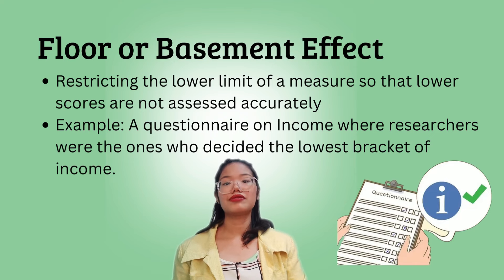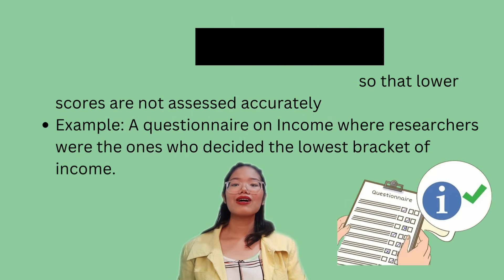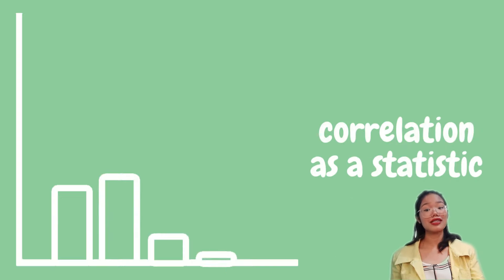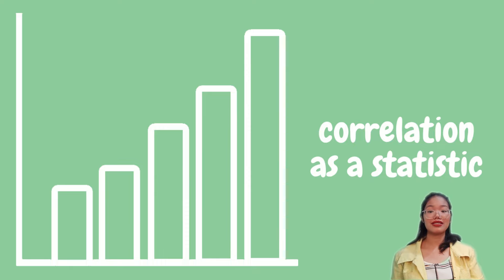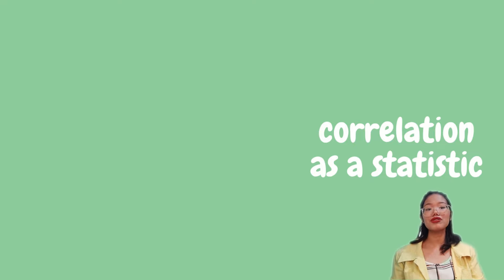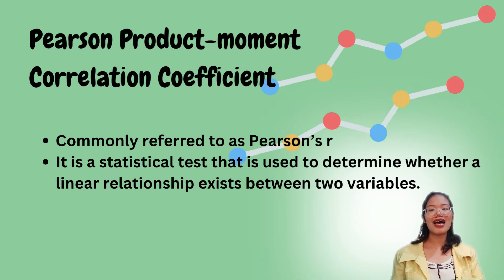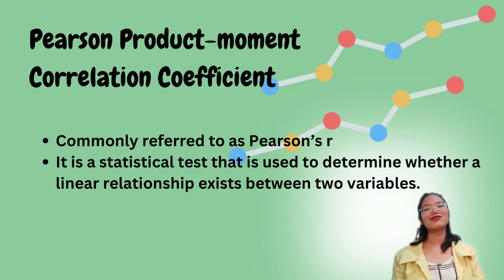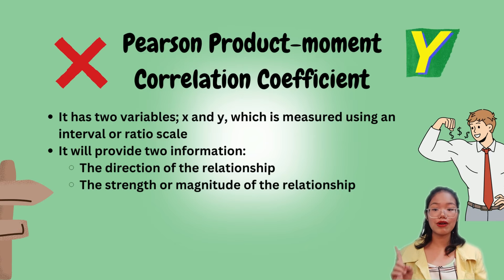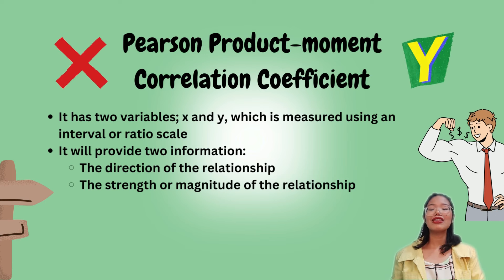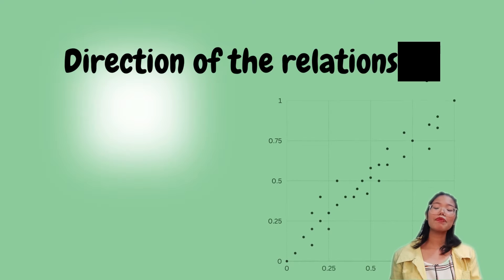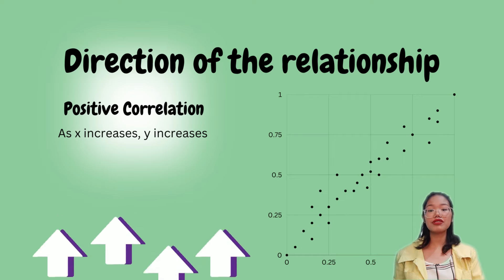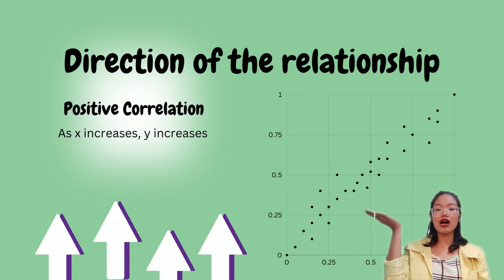Now let's move on to correlation as a statistic. Some correlational designs are analyzed with correlational statistics, while others can be analyzed by different statistics. In correlational statistics, we use the Pearson Product-Moment Correlation Coefficient, most commonly known as Pearson's R — a statistical test to determine if a linear relationship exists between two variables X and Y. Pearson's R provides two pieces of information: the direction and the strength or magnitude of the relationship. Direction can be positive or negative: in a positive correlation, as X goes up, Y also goes up.